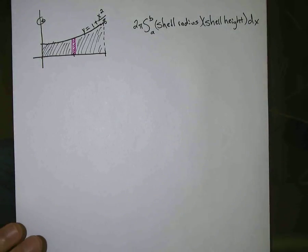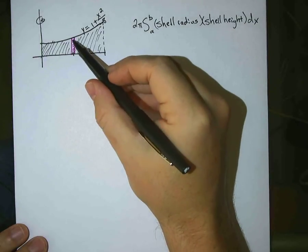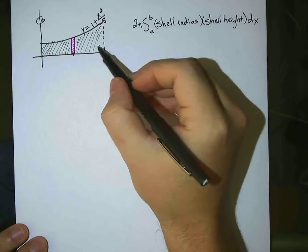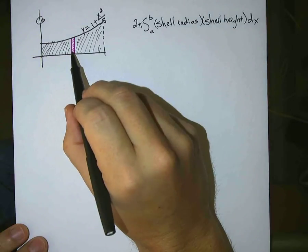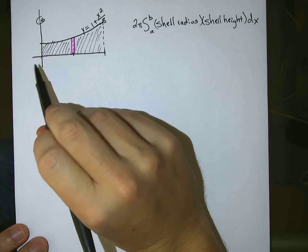Okay, and your shell, in case you're not very familiar with this, your shell is, you know, you create this rectangle here, you put it anywhere you want in this region, and you imagine this little rectangle going around the y-axis and creating a shell.